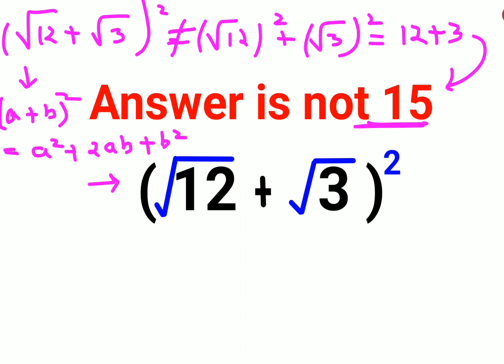Using the same logic, we will see what happens to the expansion of (√12 + √3)². We will have (√12)² + 2√12·√3 + (√3)².